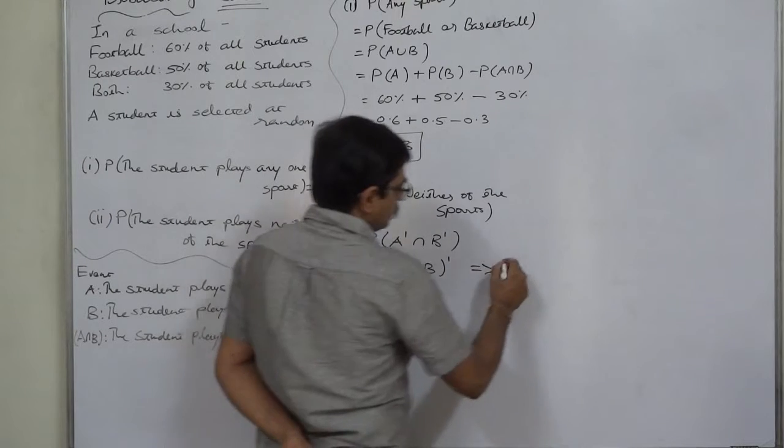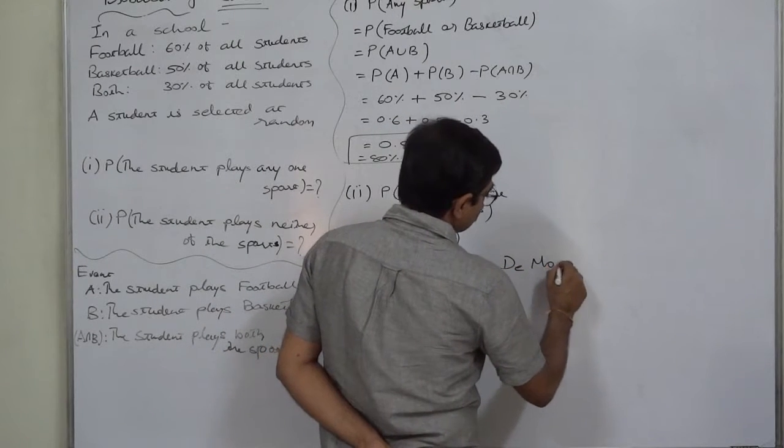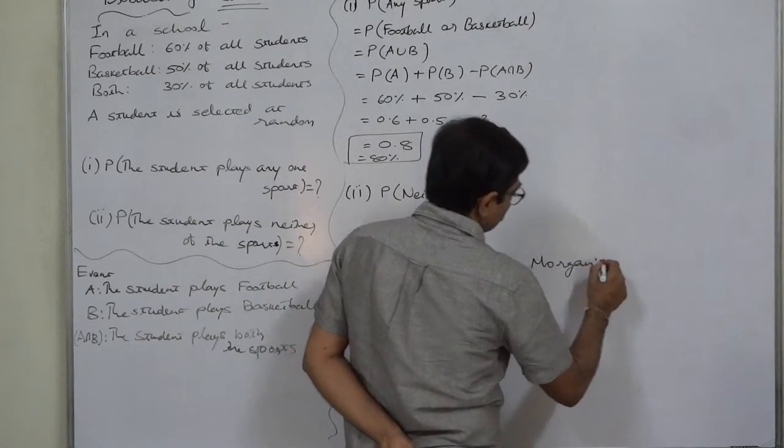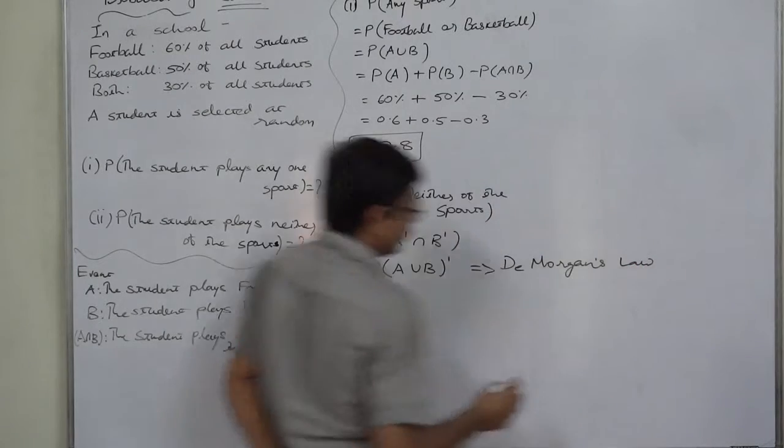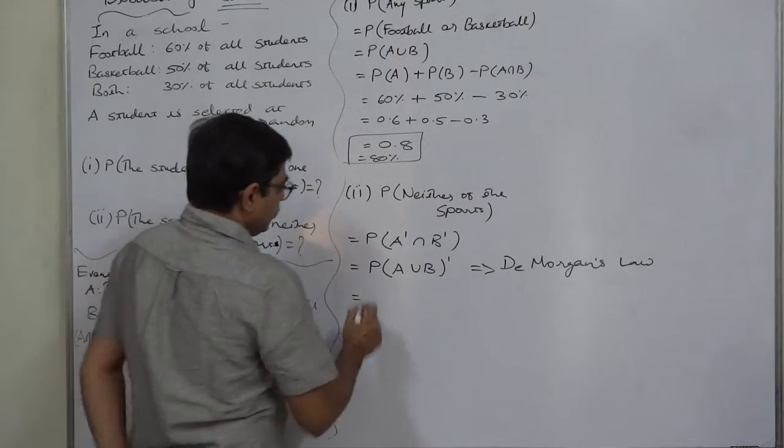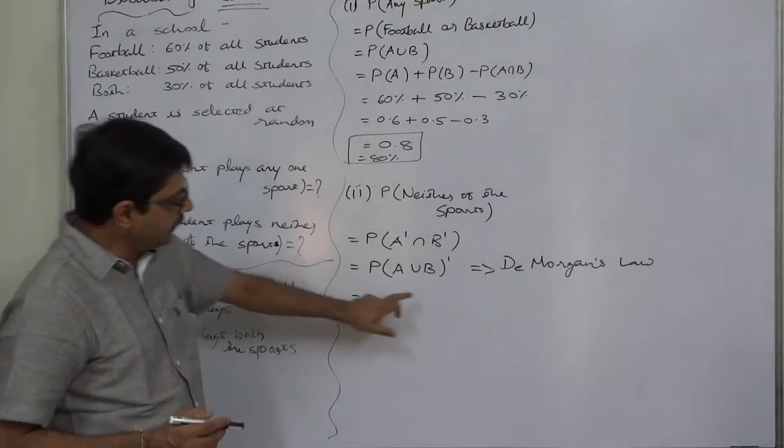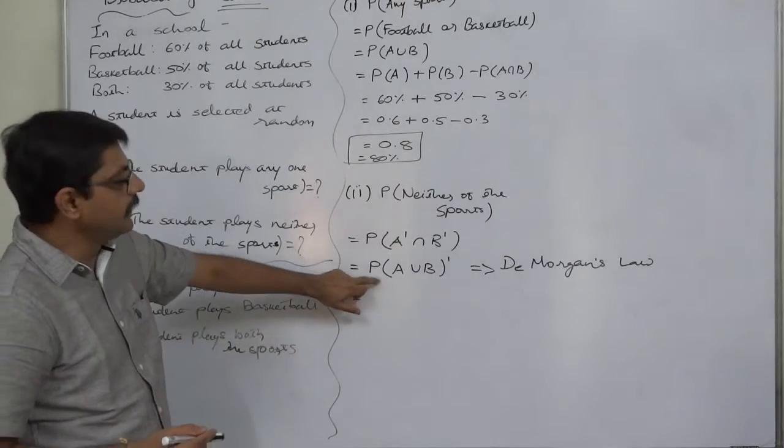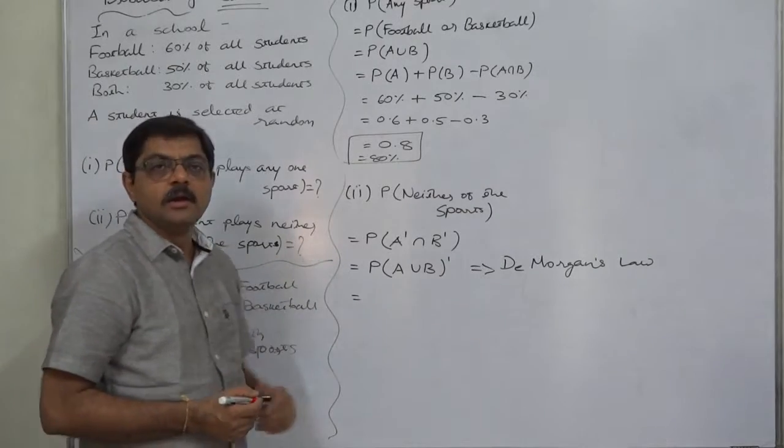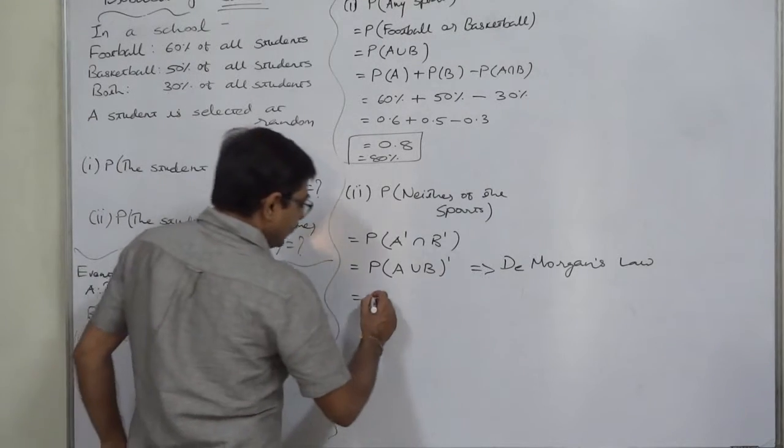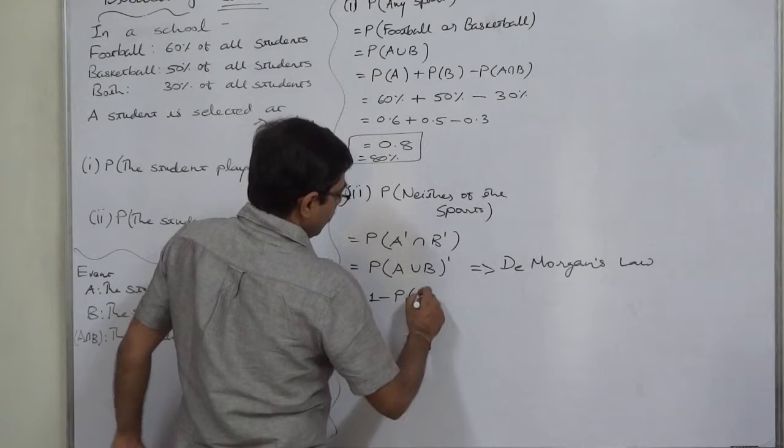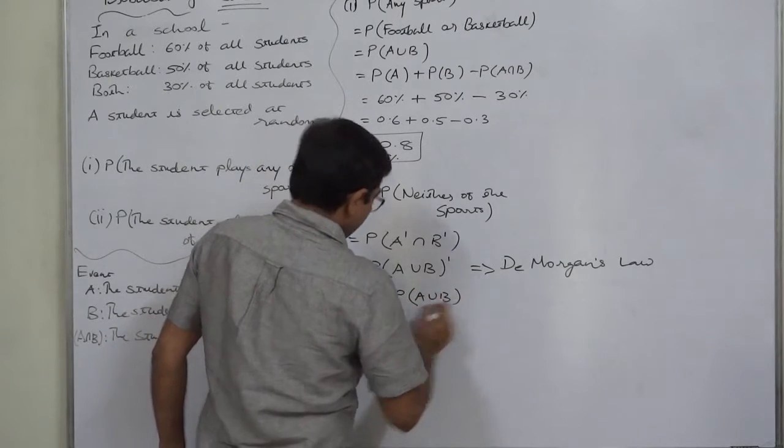And what is it? Probability of A complement intersection B complement is equal to probability of (A union B) the whole complement, and that is nothing but 1 minus P(A∪B).